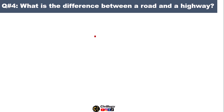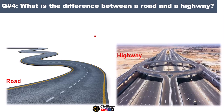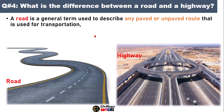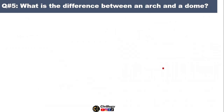Question number four: what is the difference between a road and a highway? A road is a general term used to describe any paved or unpaved route that is used for transportation. Whereas a highway is a type of road that is designed for high-speed, long-distance travel and is typically divided into multiple lanes, as you can see in the picture.